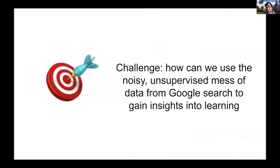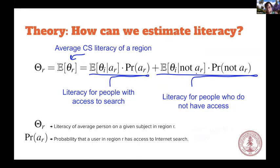I really turned to Serhat and said, I've got this cool challenge for you. We've got this noisy, unsupervised mess of data from Google search to gain insights into learning. And he really took that to town. We set up a little bit of theory — the full details are in the paper — but basically, while we would like to know the full distribution of people's literacy and how much they know computer science, we can only talk about the average because of the data we have access to. If you talk about the average knowledge of somebody in a region, you can use the total law of probability to split that up between people who have access to search and people who don't.